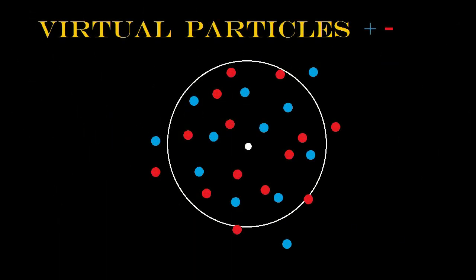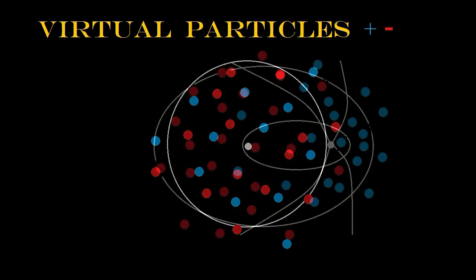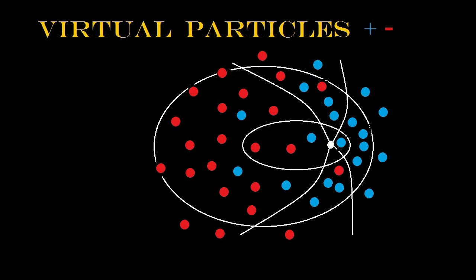We might also hypothesize that virtual particles form near the two foci of the accelerated ellipsoidal field with one focus favoring the creation of positive particles and the other favoring negative virtual particles and that an asymmetric magnetic field would then operate on these particles drawing the axis of the ellipsoidal field out of the plane of rotation.